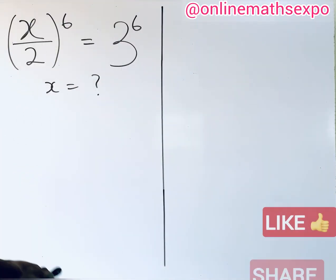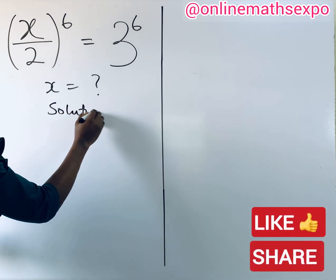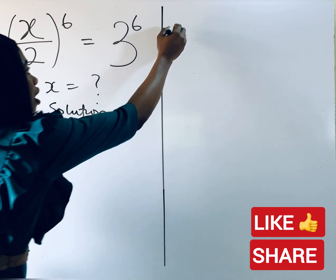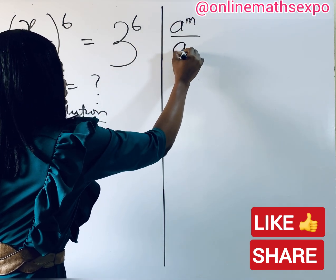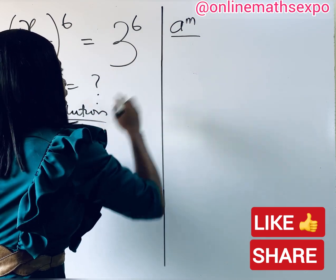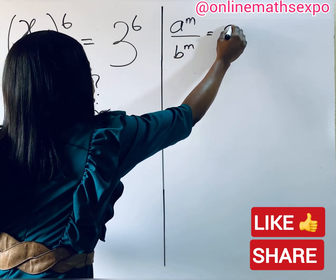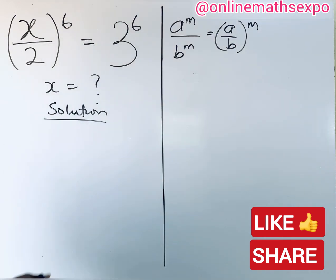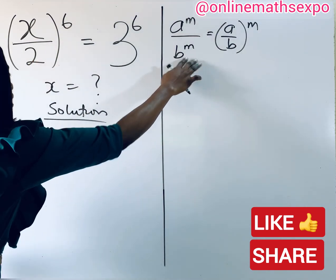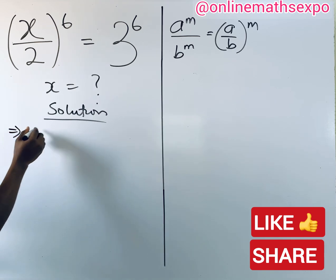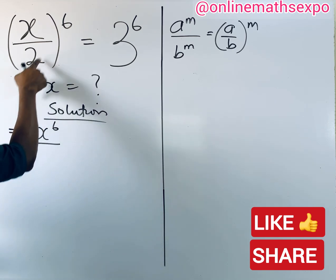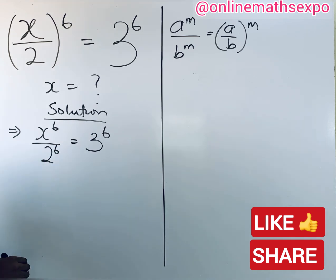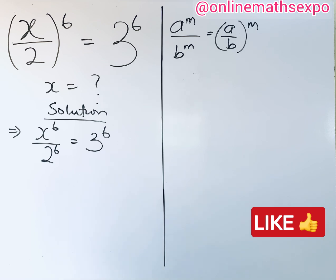Let's begin with the solution. Remember that each time you have a to the power of m divided by b to the power of m, it is the same as (a divided by b) all raised to one power. Applying this here, this gives us x to the power of 6 divided by 2 to the power of 6 is equal to 3 to the power of 6.